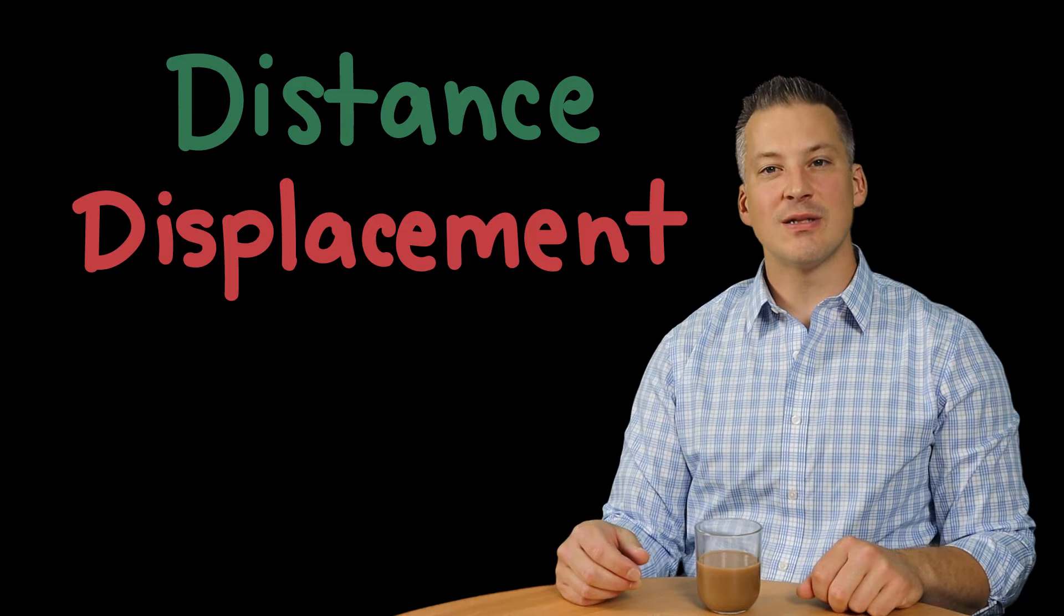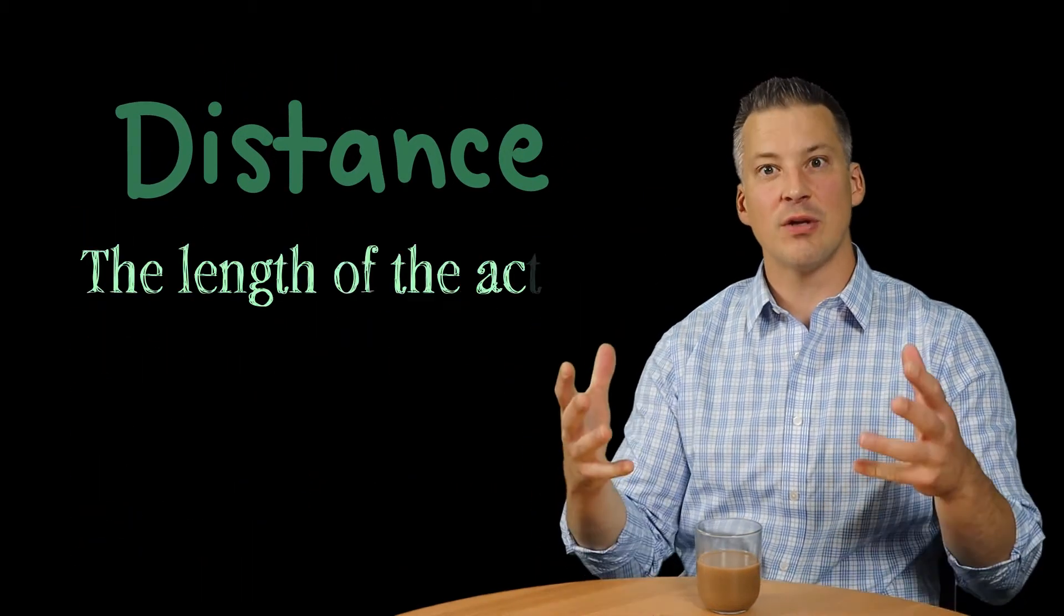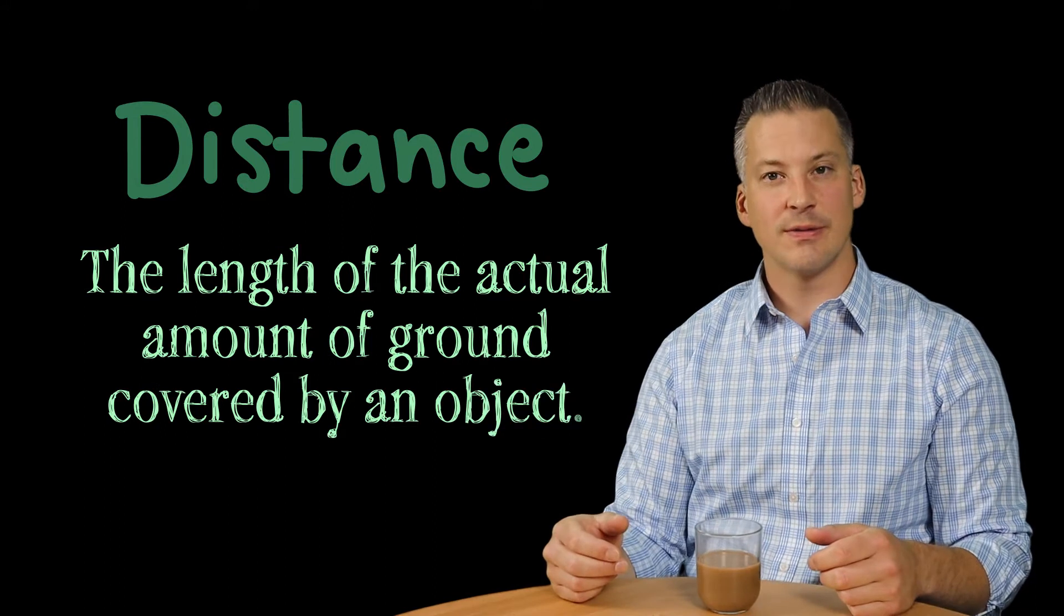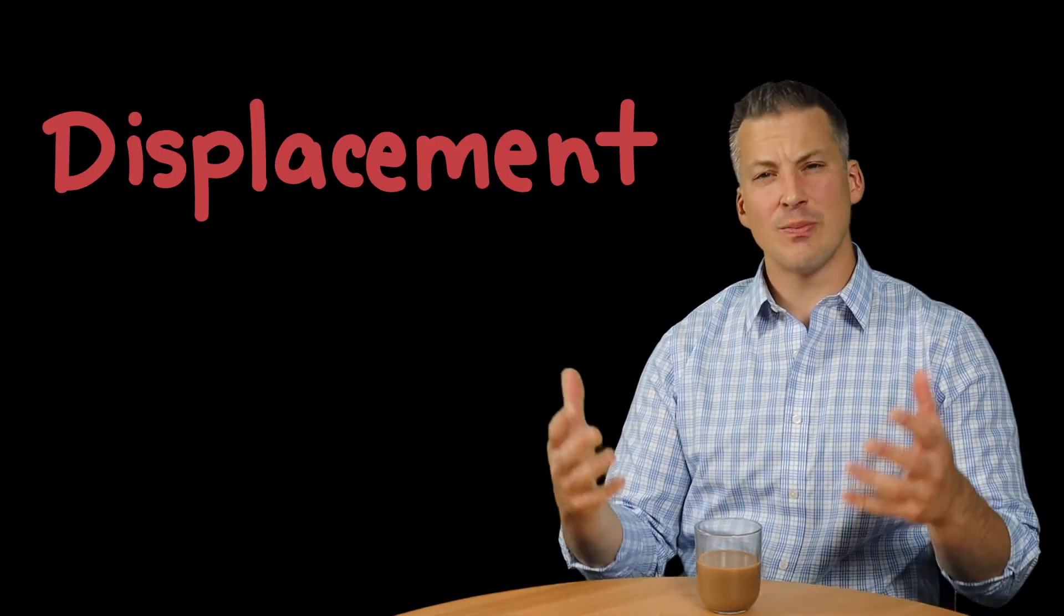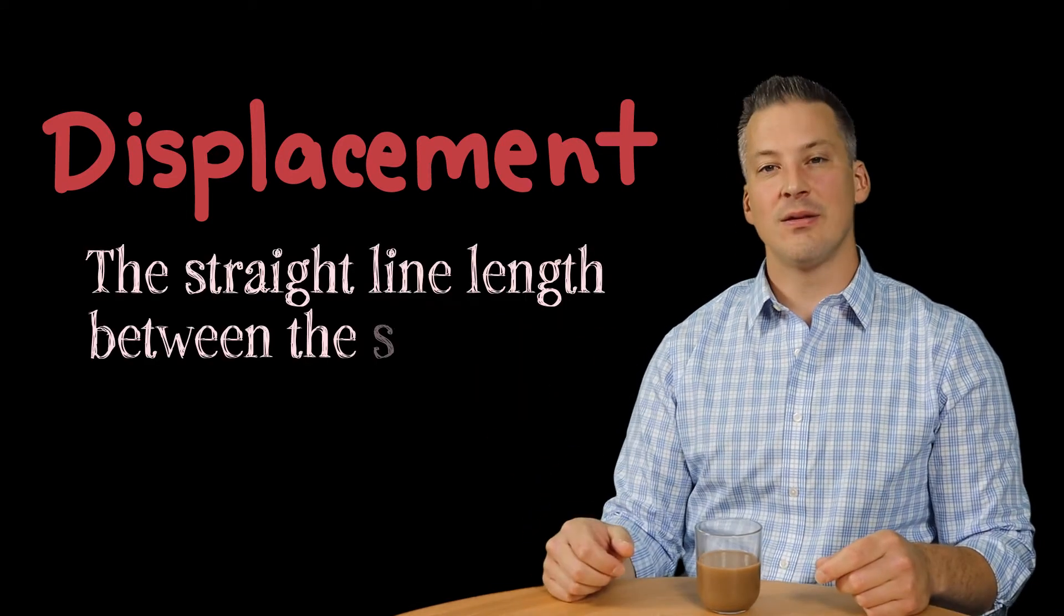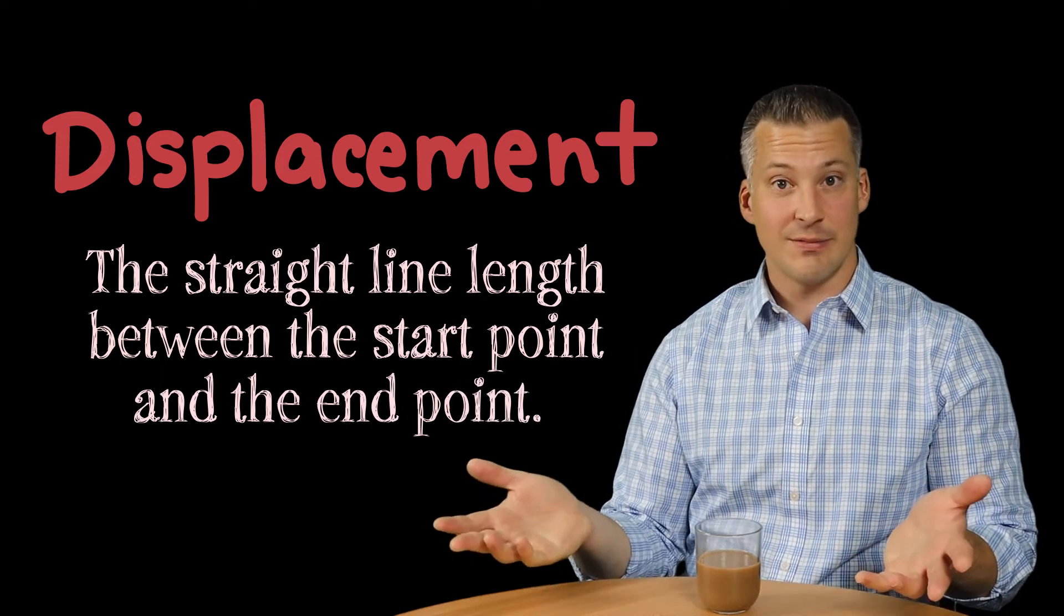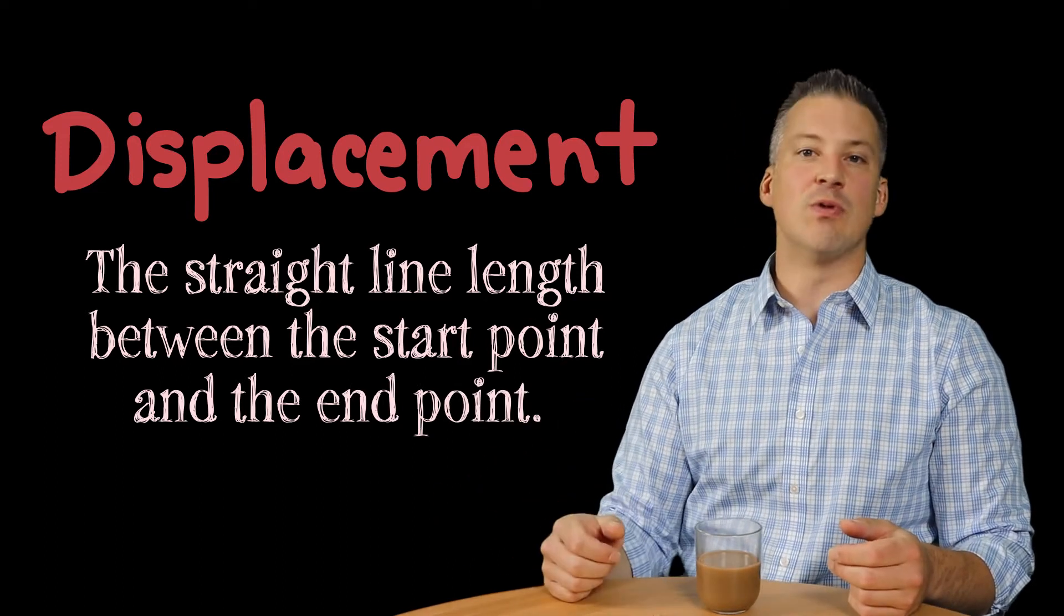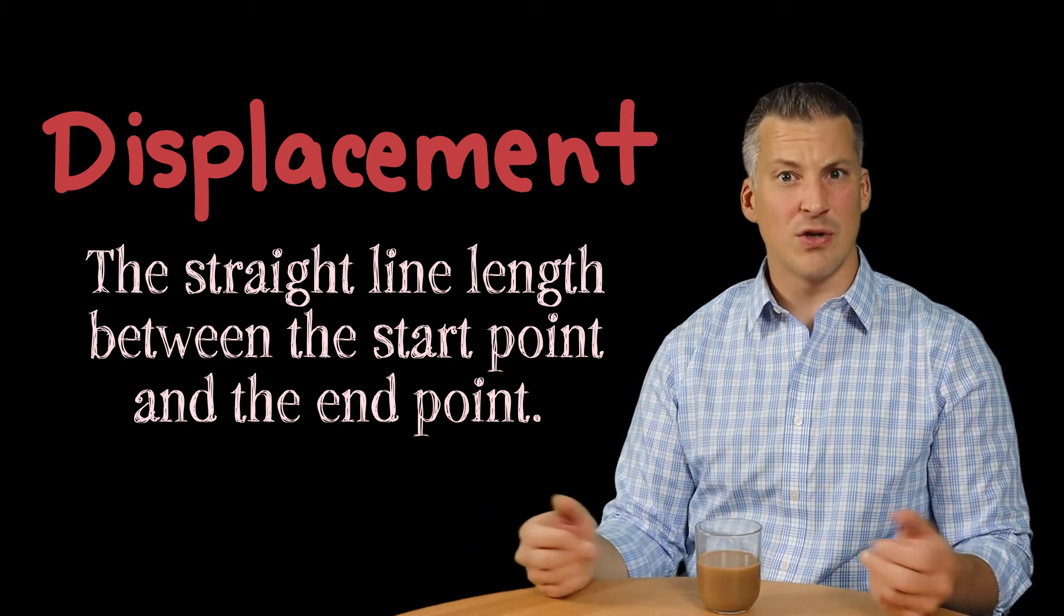So let's define what distance is. Now distance, it turns out, is the length of the actual amount of ground covered by an object. And displacement can be thought of simply as the change in position of an object, or in other words, the straight line length between the start point, whatever that's deemed to be, and the end point. Start and end are always relative terms.